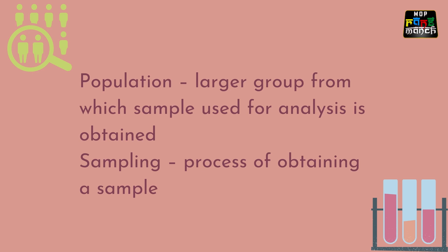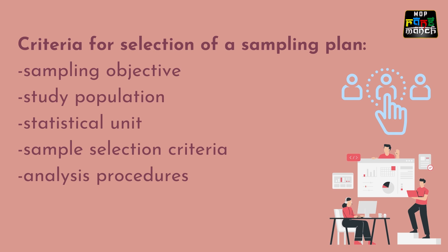Before the collection of the sample from a population, a sampling plan must be clearly stated. The International Union of Pure and Applied Chemistry defines a sampling plan as a predetermined procedure for the selection, withdrawal, preservation, transportation, and preparation of the portions to be removed from a lot as samples. A sampling plan should be selected on the basis of the sampling objective, the study population, the statistical unit, the sample selection criteria, and the analysis procedure.